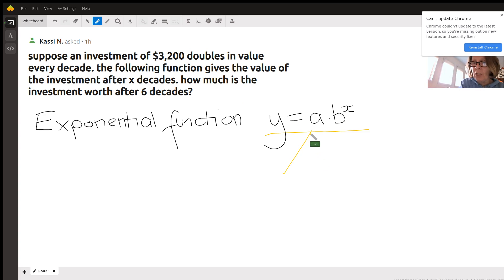Our a is our initial value. Let me just jot this down. You can see what your initial value is that you're starting with. It is indeed the $3,200.